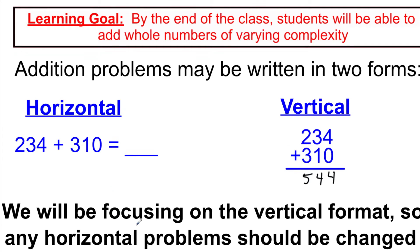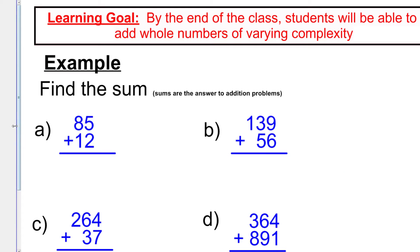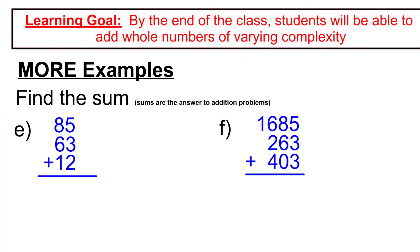We're going to be focusing on the vertical format, so anything in horizontal form should just be changed. Your goal is to rewrite the numbers so that the place values line up. If you're ever presented with a problem written horizontally, turn it into vertical form first, making sure everything lines up properly. The instructions here say 'find the sum,' and sum means the answer to an addition problem.